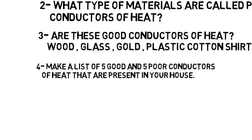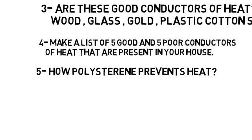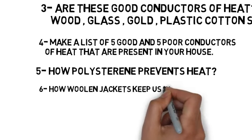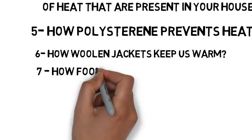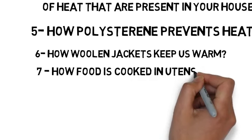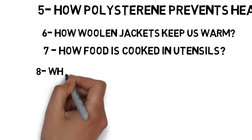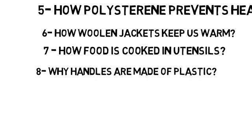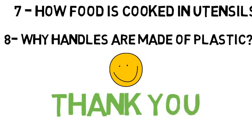Question five: how does polystyrene prevent heat? — answer on page 54, first paragraph. Question six: how do woolen jackets keep us warm? — answer on page 54, last paragraph. Question seven: how is food cooked in utensils? — answer in the last two lines of the second paragraph of page 55. Question eight: why are handles made of plastic? — answer in the last paragraph of page 55. That's all — thank you, stay at home, stay safe, best of luck.